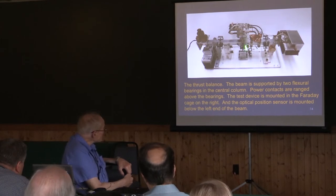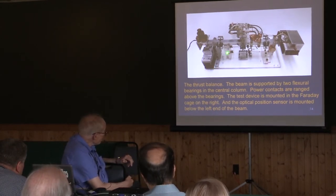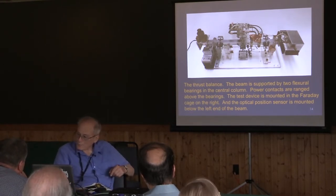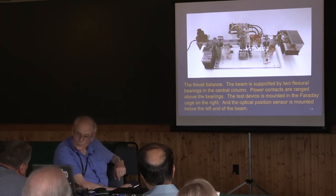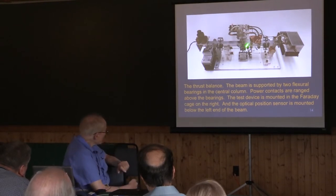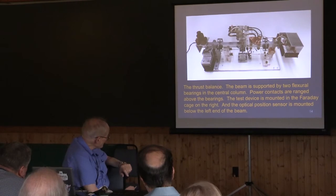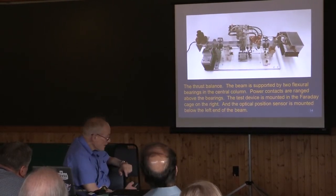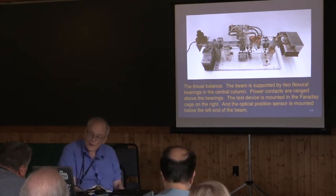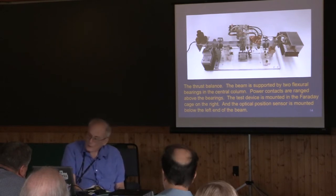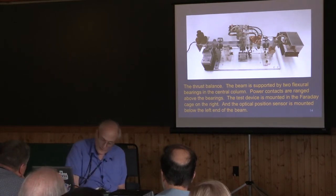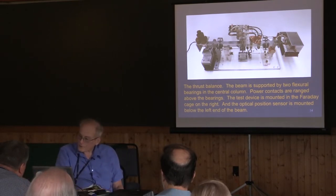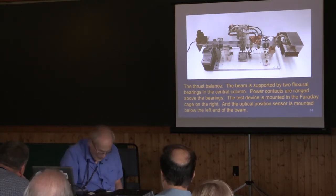This is a central column. This over here is a beam support so you can lock the beam while you're doing stuff with the Faraday cage. If you forget to unlock it, it's not the end of the world because the flexural bearings are much more robust than you might imagine. This is a damper — a bunch of neodymium boron magnets embedded in a plastic piece, with aluminum blades on either side in an eddy-current damping system. By trial and error, we got the damping to be just slightly subcritical, so the balance has a settling time of about five seconds, but you can still see transient effects.